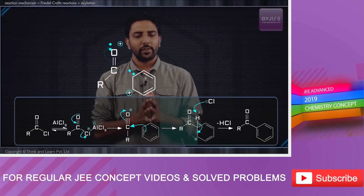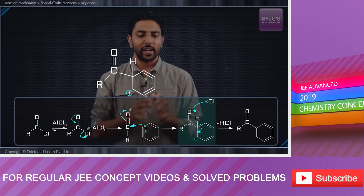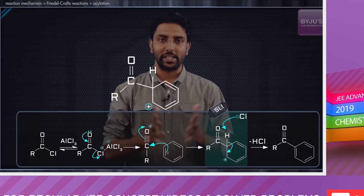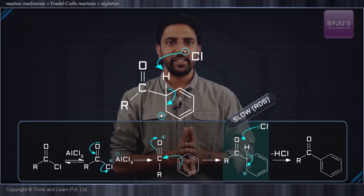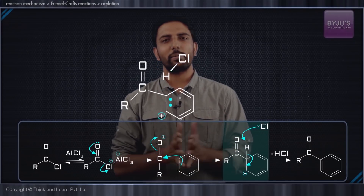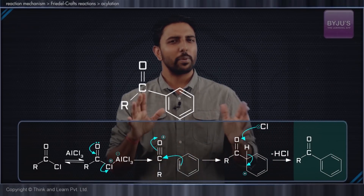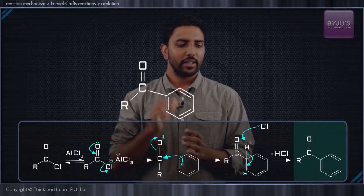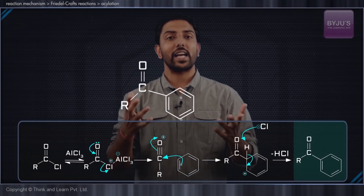This electrophile attacks the benzene ring. Again, we have the loss of aromaticity — this intermediate is going to be non-aromatic, and the formation of this intermediate is going to be the slowest rate-determining step. Immediately after the RDS, deprotonation happens, which has to be pretty fast. Immediately after deprotonation, the aromaticity of the ring is re-established and the product is said to be acylated.